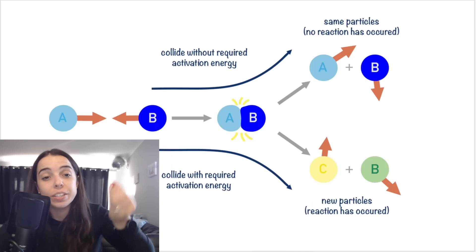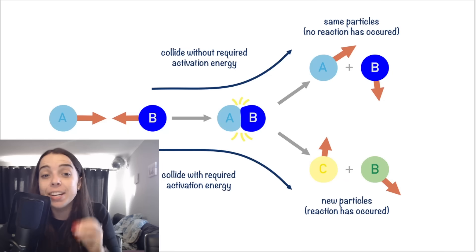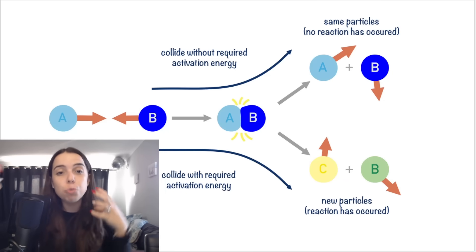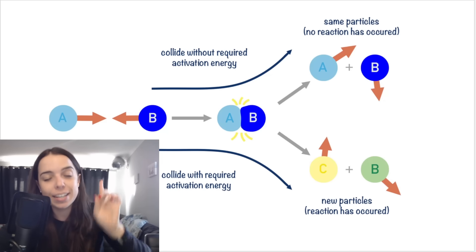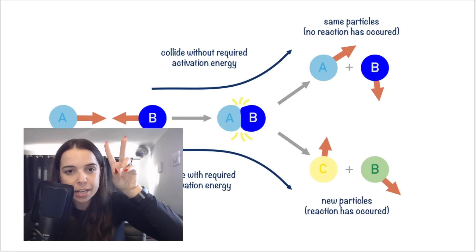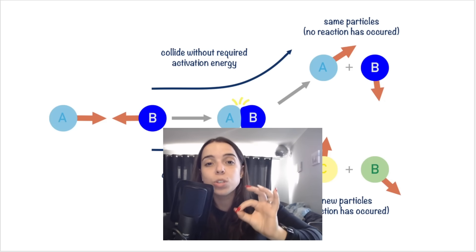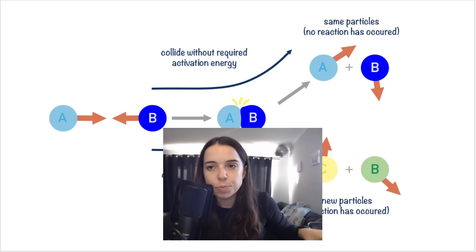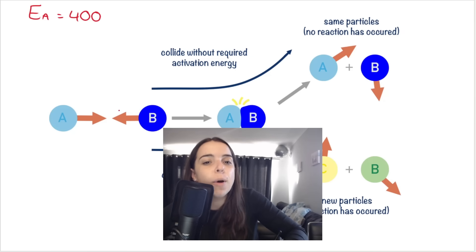This diagram illustrates the energy criteria — that we need enough energy. Particles or molecules need to have kinetic energy, which has to do with motion and movement. So particles must have kinetic energy equal to or greater than the activation energy. Here we have A and B colliding, but in this case it says: collision without the required activation energy. Let's pretend the activation energy is 400.